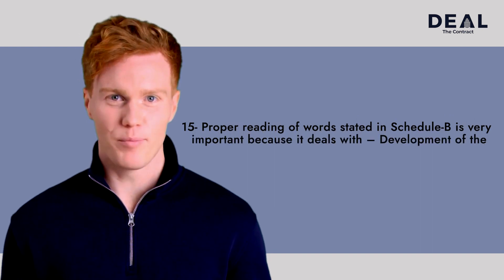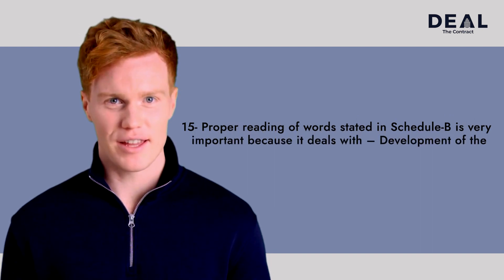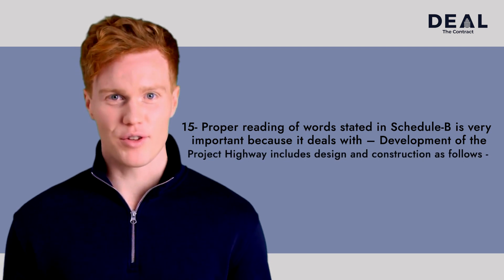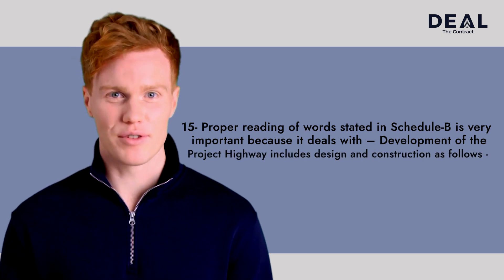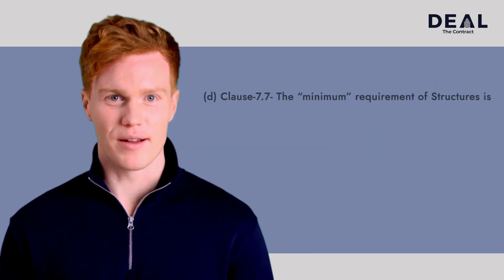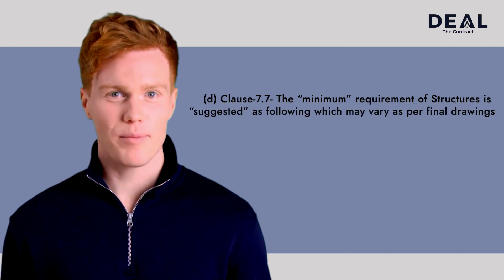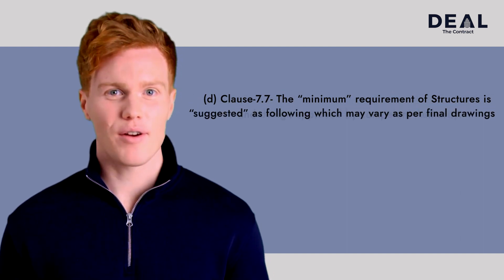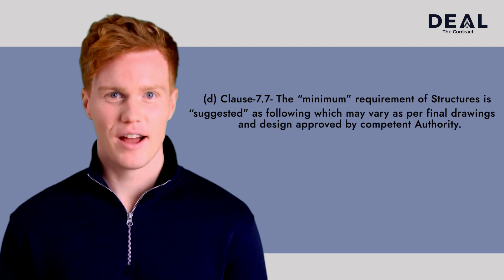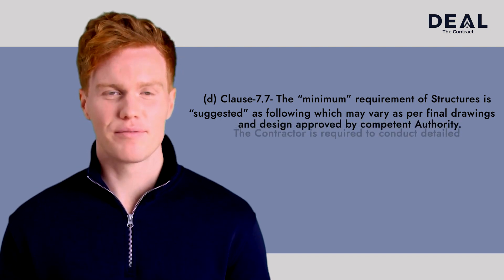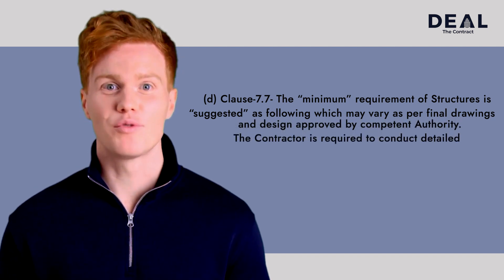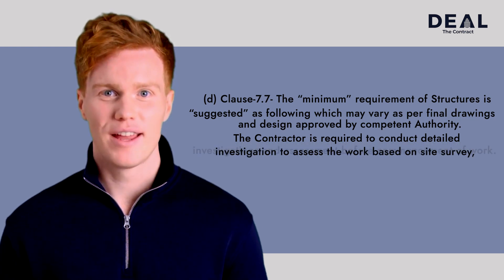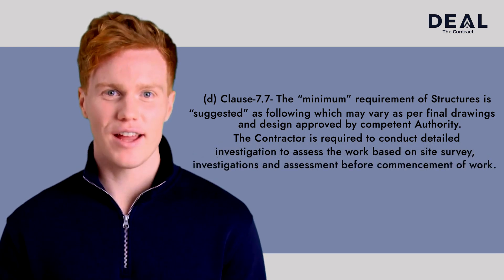The proper reading of words stated in Schedule B is very important because it deals with development of the project highway including design and construction. Clause 7.7 — the minimum requirement of structures is suggested as follows, which may vary as per final drawings and design approved by the competent authority. The contractor is required to conduct a detailed investigation to assess the work based on on-site surveys, investigations, and assessments before the commencement of work.